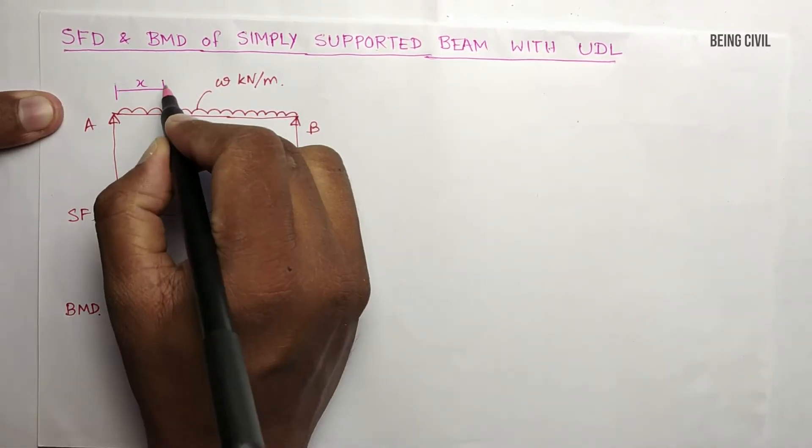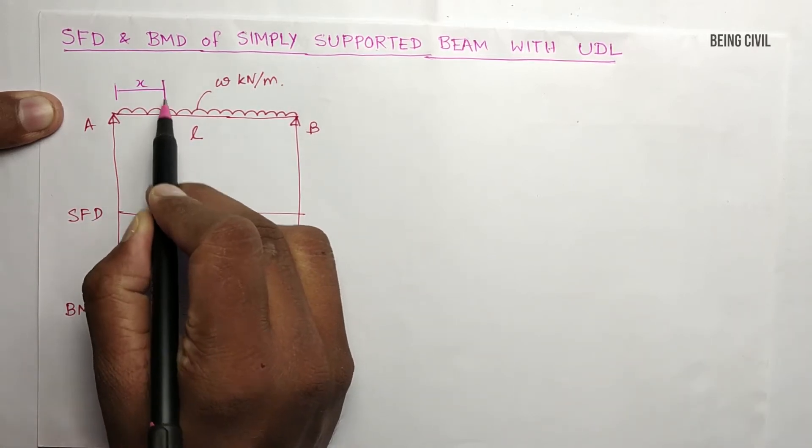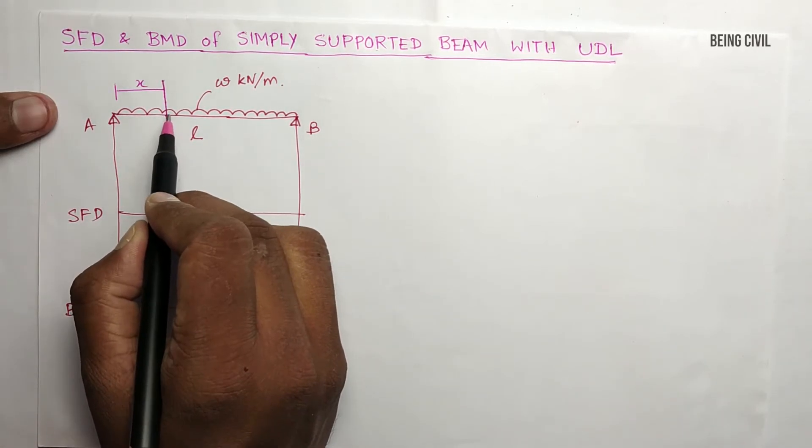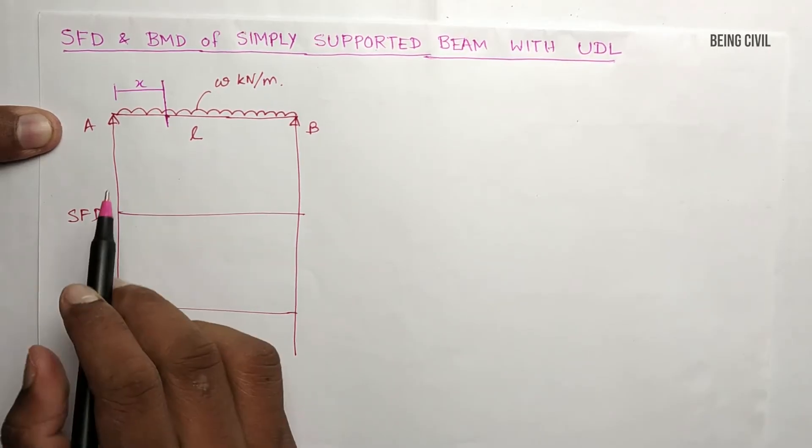Then we will get equations of shear force and bending moment which are dependent on X. By putting the value of X at different positions, we can get the diagram.